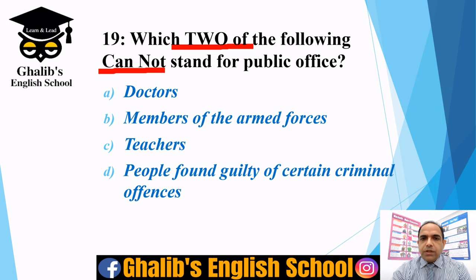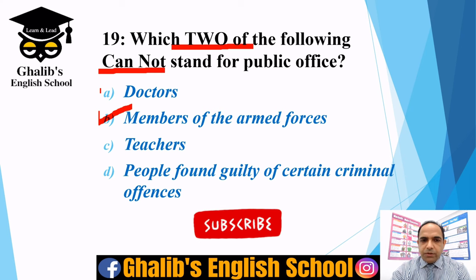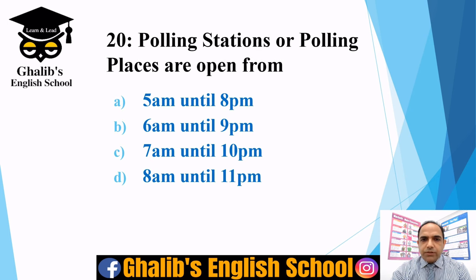Question nineteen: which two of the following cannot stand for public office? Make sure you read the question carefully. The options are: doctors, members of the armed forces, teachers, or people found guilty of certain criminal offences. The correct options are: members of the armed forces cannot stand for public office, and people who are found guilty of certain criminal offences cannot stand for public office.